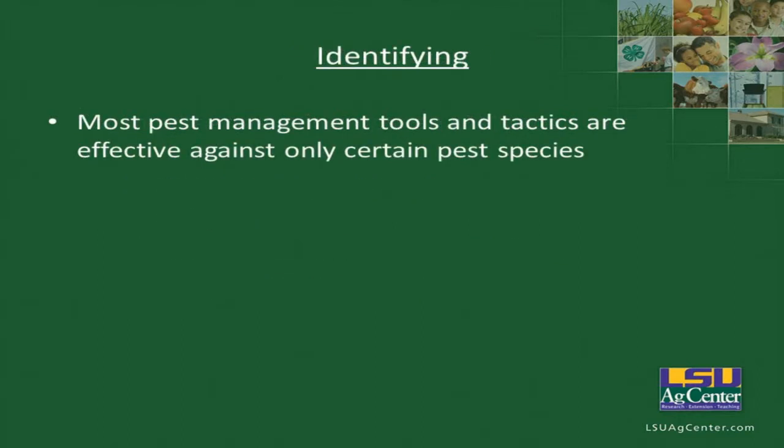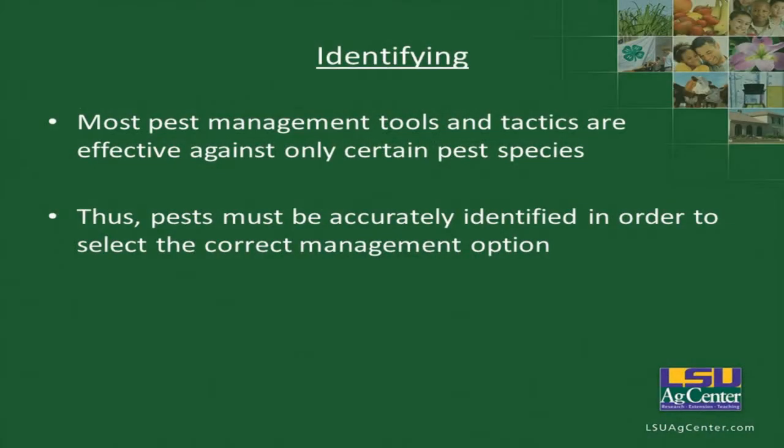In identifying an insect, most pest management tools and tactics are effective only against a certain pest species. So what I use for three-cornered alfalfa hopper control is not going to be the same as what I use for soybean looper control, for instance. Thus, pests must be accurately identified in order to select the correct control management option.